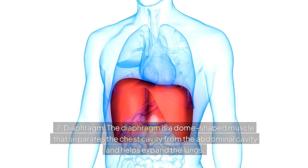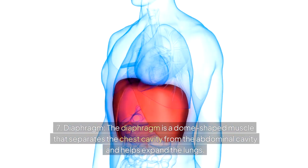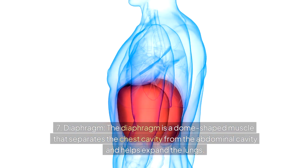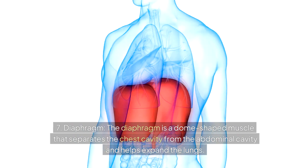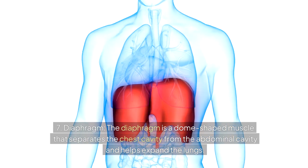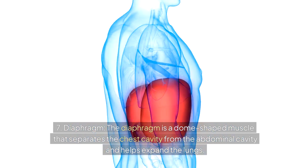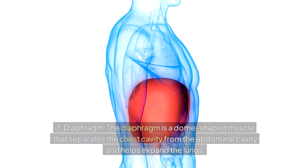7. Diaphragm — the diaphragm is a dome-shaped muscle that separates the chest cavity from the abdominal cavity and helps expand the lungs.